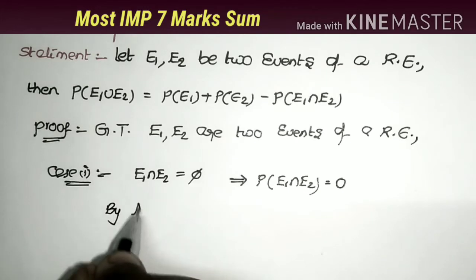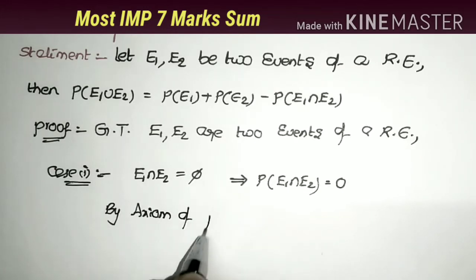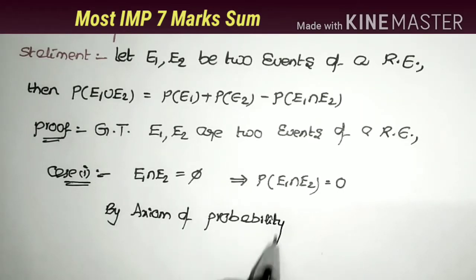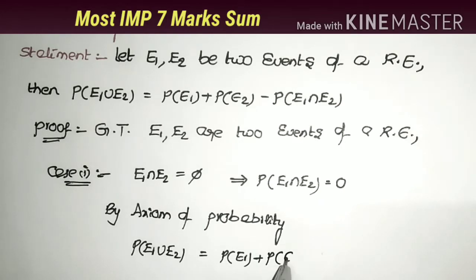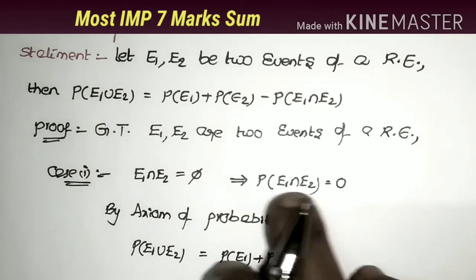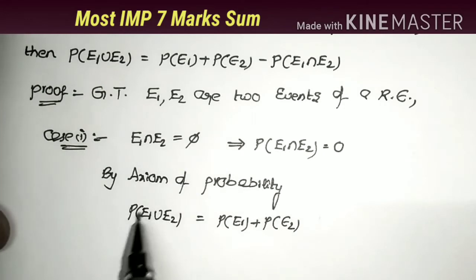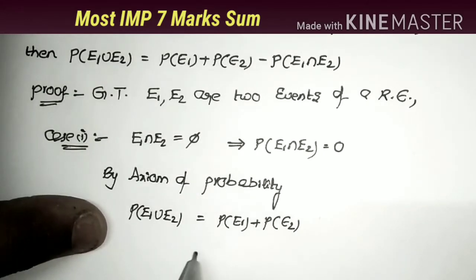By the axiom of probability, we already know the formula: when P(E1 ∩ E2) = 0, then P(E1 ∪ E2) = P(E1) + P(E2).